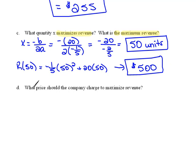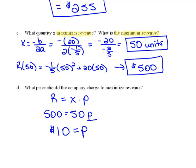Finally, it says what price should the company charge to maximize revenue? Well, if revenue equals quantity times price, if we made $500 by selling 50 units, we could figure out what the price would have to be for that. And that price would have to be $10 each. If we sell 50 items at $10 each, we make $500, which is our maximum revenue for this particular situation.